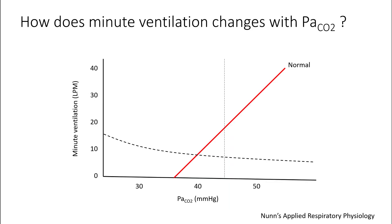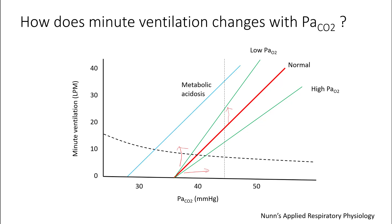As CO2 levels rise, minute ventilation also increases, and this process is augmented by hypoxia. So for the same degree of PCO2, your minute ventilation is higher if you are also hypoxic. If you have other forms of acidosis producing H+ ions, it will be sensed as well and will cause a further rise in minute ventilation. So minute ventilation increases with metabolic acidosis, hypoxia, and hypercapnia.